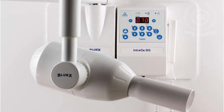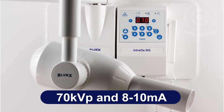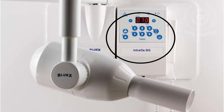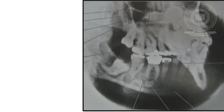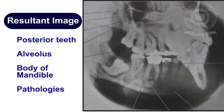The exposure parameters are 70 kilovolts and 8 to 10 milliamperes, which are fixed in the intraoral machines. Since this radiograph is taken with an intraoral radiographic machine, only the exposure time can be altered, and the exposure time can be kept the same as that used in the mandibular molar region. In the resultant image, a clear image of the posterior teeth, the alveolus, and the body of the mandible with any pathology present in the region can be visualized.